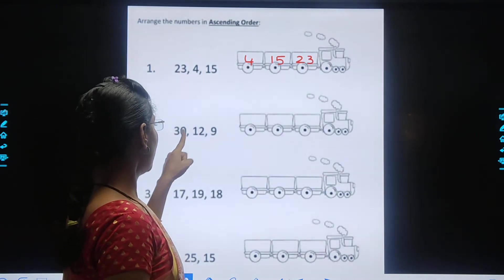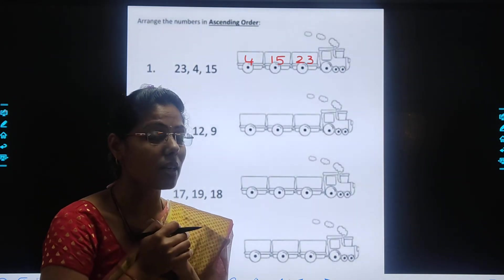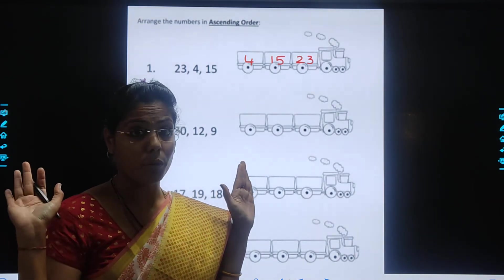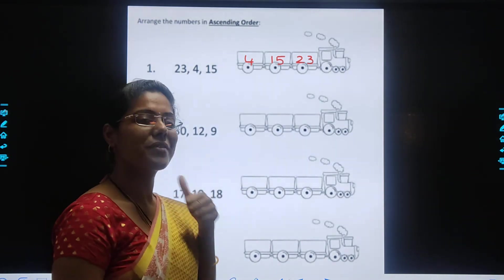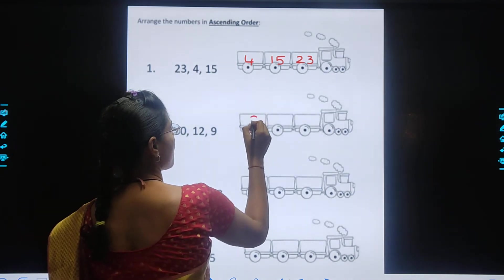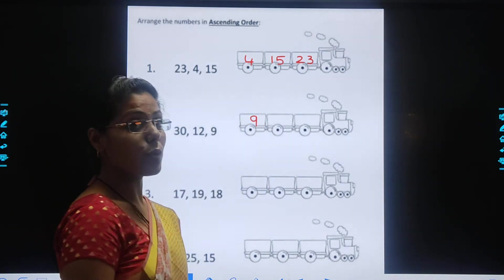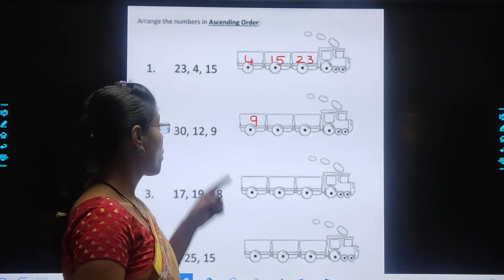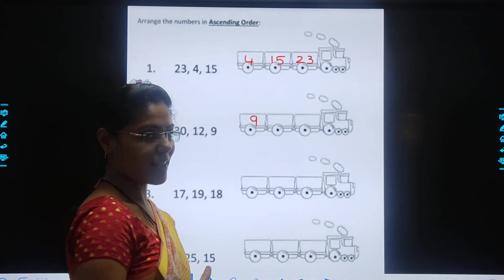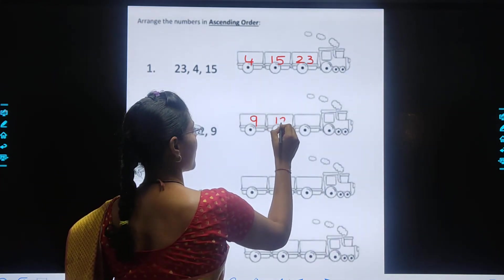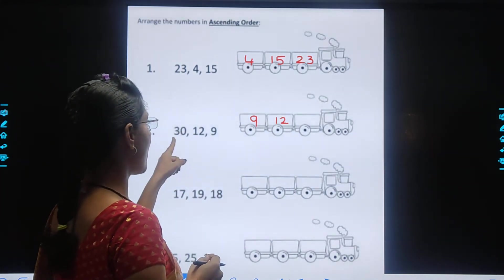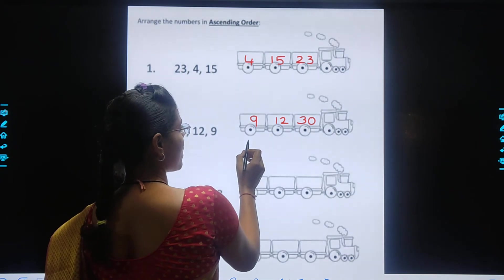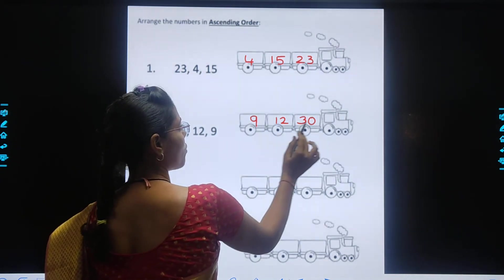Come on — 30, 12 and 9. Which is the smallest number? Sabzi chota number kamsa hai? 12? No. 9? Yes. So we will write the smallest number 9 over here. Then afterwards, which number will come? 30? No. 12? Yes. So we will write 12. And at last, which number will come? 30. So kids, we have arranged this number from smallest to biggest.